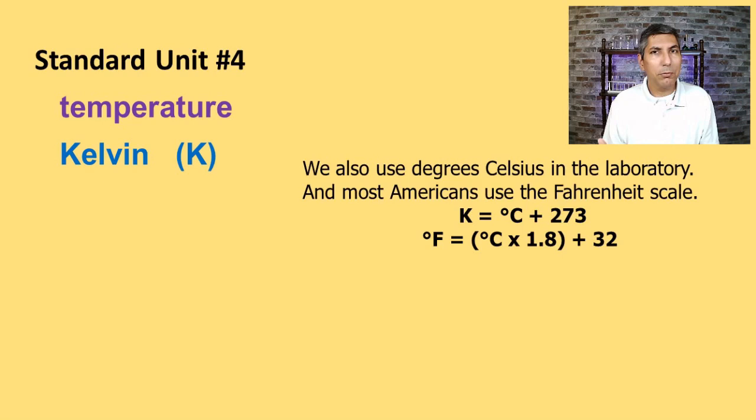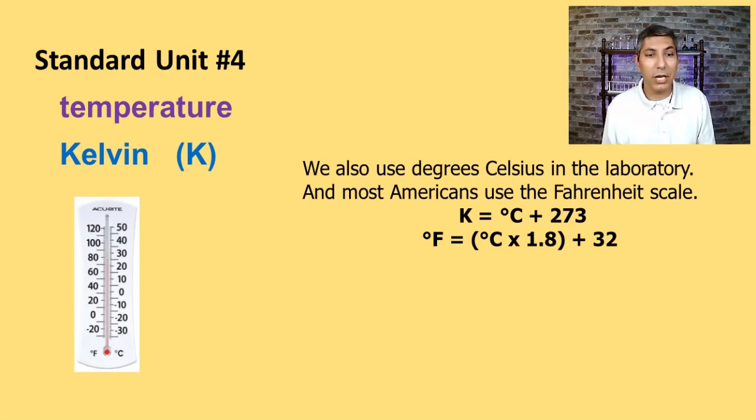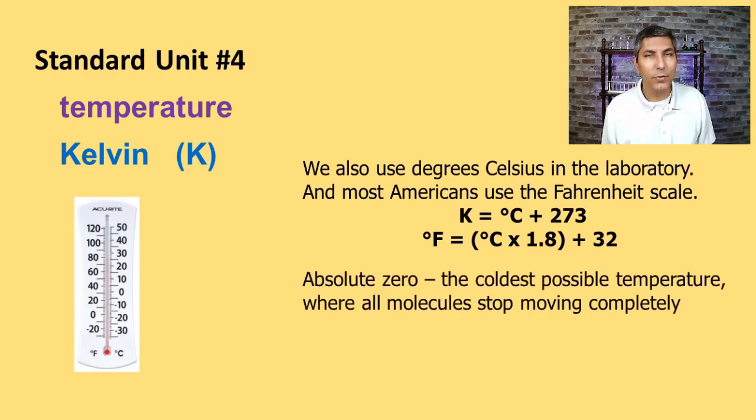And as it turns out, in the laboratory, we use degrees Celsius quite a bit as well. And in a few countries like the United States, there are a lot of people who still use the Fahrenheit scale. So often it's very useful to be able to convert among these three temperature scales. So if you're given degrees Celsius, if you take degrees Celsius and add 273 to that number, you're going to get Kelvins. And likewise, if you have to convert between degrees Celsius and Fahrenheit, you take degrees Celsius, multiply by 1.8, and then add 32, and you'll have degrees Fahrenheit. And so we often measure temperature with a thermometer that looks something like this.